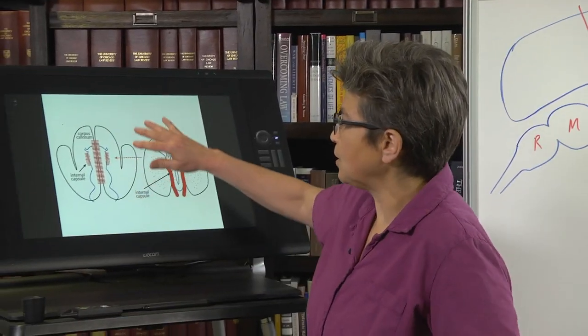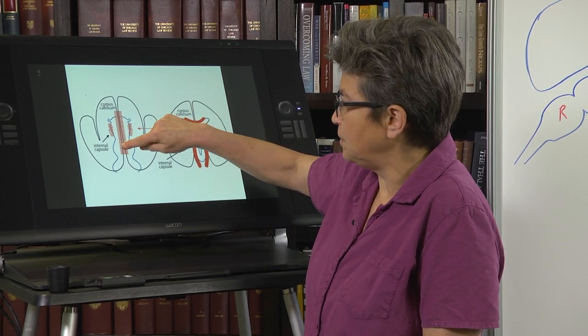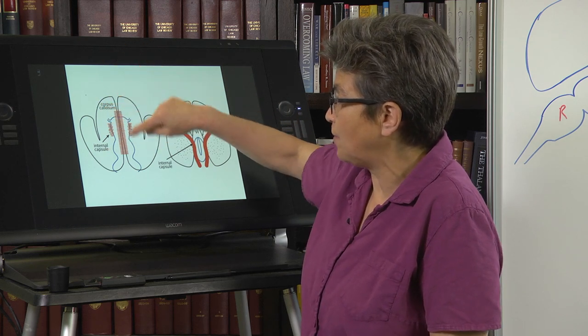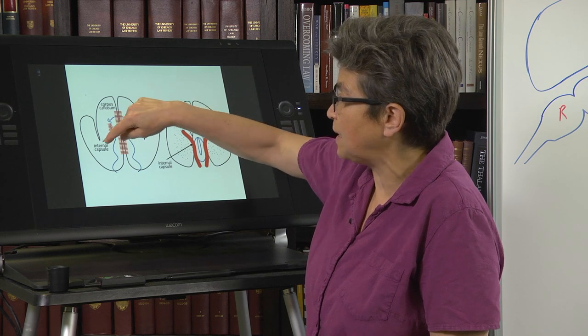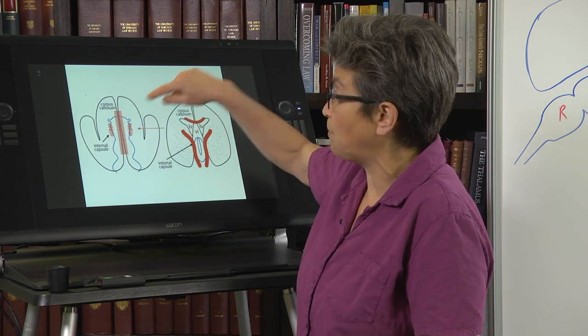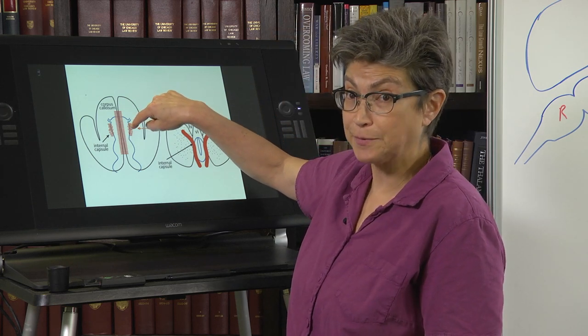So here is looking down. And what you see is diencephalon, mesencephalon, rhombencephalon, and the overlying two hemispheres. One connection is through the corpus callosum that knits these two hemispheres together. And the other connection is by axons that are diving down here as the internal capsule.